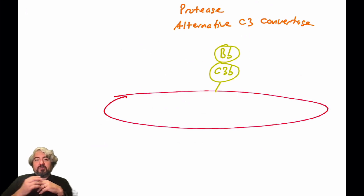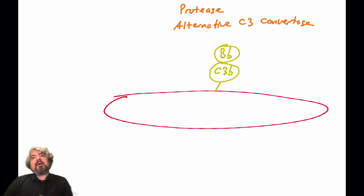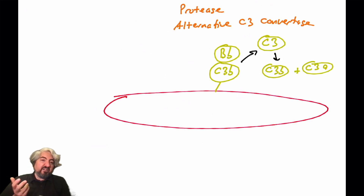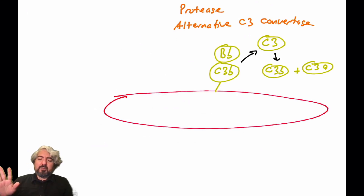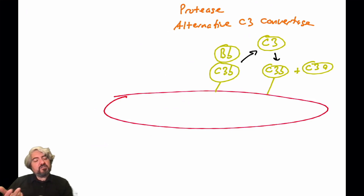We'll start with the alternative C3 convertase, since we previously talked about the alternative pathway of complement activation. The alternative C3 convertase is a protease made up of two proteins: C3b, which is covalently attached to the surface of the pathogen, and the protein Bb. This C3 convertase cleaves C3 into C3a and C3b. C3a is an anaphylatoxin we'll cover later; C3b has a very reactive thioester group and can fix to the surface of the pathogen — complement fixation.